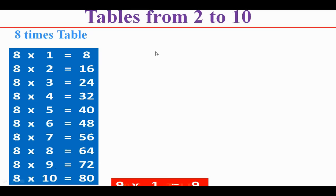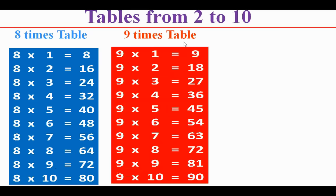8 10s are 80. 9 times table: 9 1s are 9, 9 2s are 18, 9 3s are 27, 9 4s are 36, 9 5s are 45, 9 6s are 54, 9 7s are 63, 9 8s are 72, 9 9s are 81, 9 10s are 90.